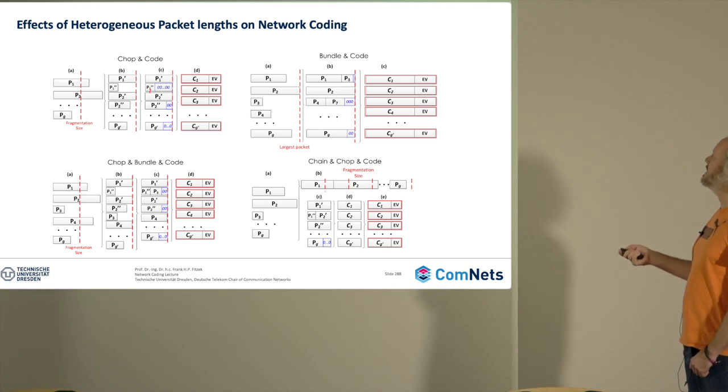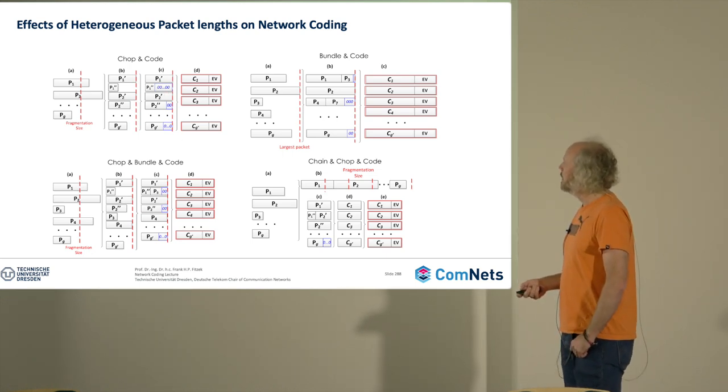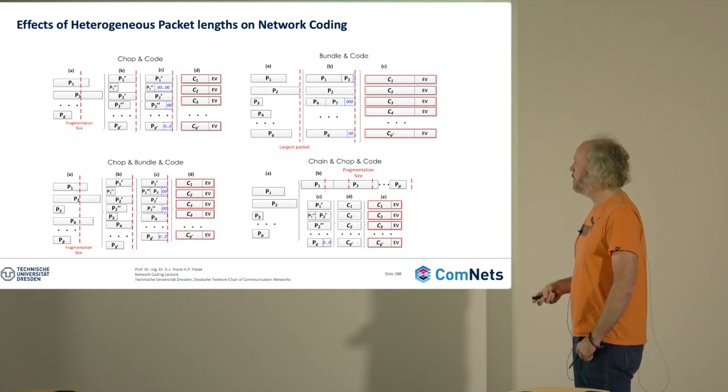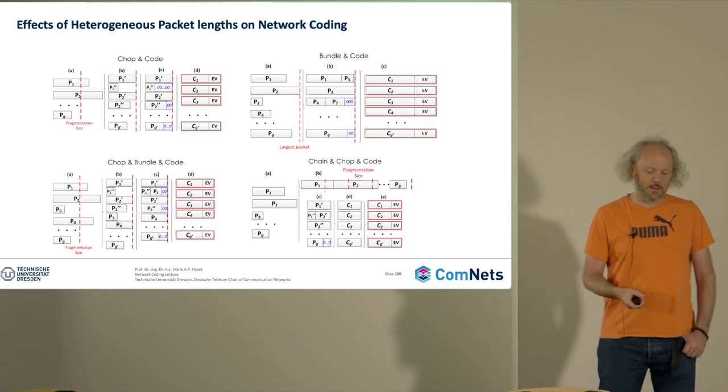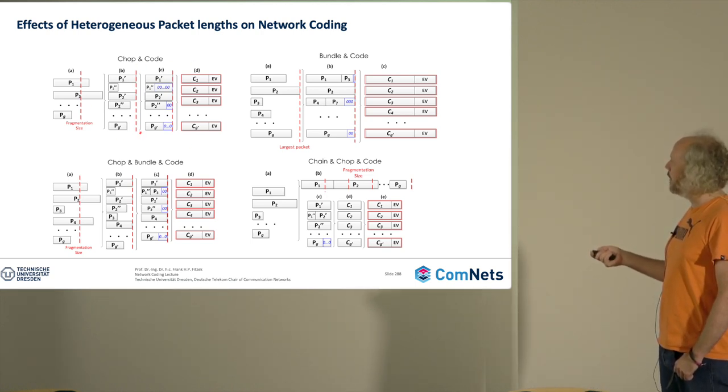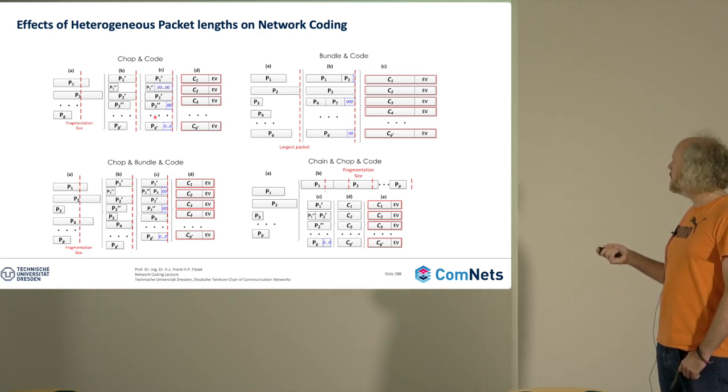In this case, it seems that only every second packet needs a little bit of padding, and the padding is less than in the example before. So just by defining a fragmentation size, you will maybe reduce the padding, but what you also do is increase the generation size virtually.